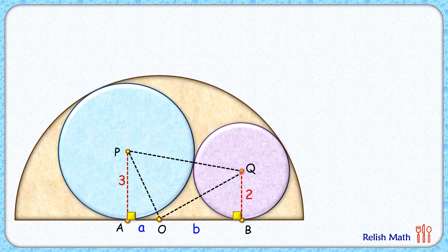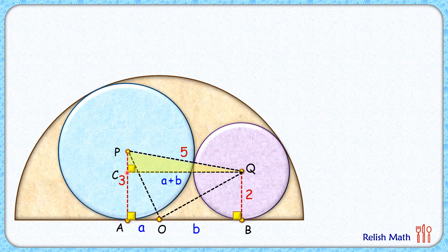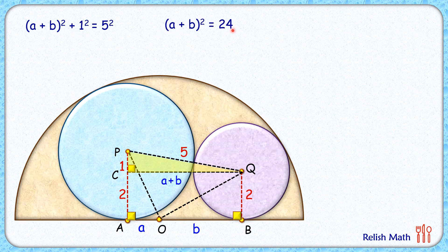To find the value of a plus b, from point Q let's drop a perpendicular onto PA. In triangle PCQ, we'll apply Pythagoras' theorem. CQ length is the same as AB, or a plus b. PQ length is the radius of the blue circle plus the radius of the purple circle, or 5 centimeters. PC length: CA is the same as QB length, so PC equals 3 minus 2, or 1 centimeter.